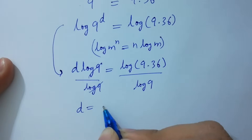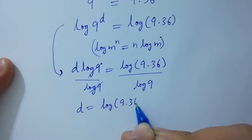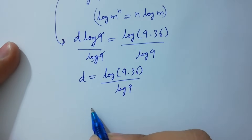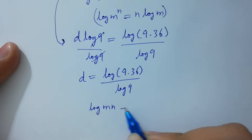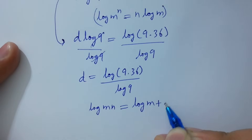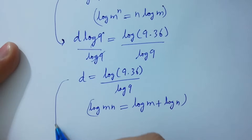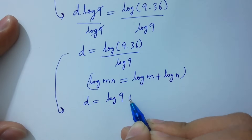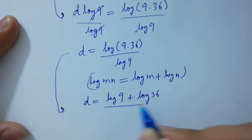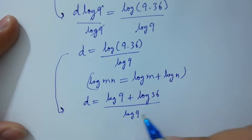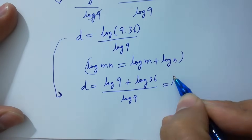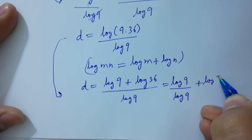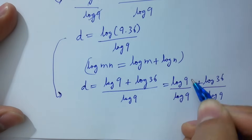d equals log of 9 times 36 over log 9. As log of 9 times 36 expands to log 9 plus log 36 over log 9. We can see log 9 over log 9 plus log 36 over log 9. Log 9 and log 9 will be cancelled.